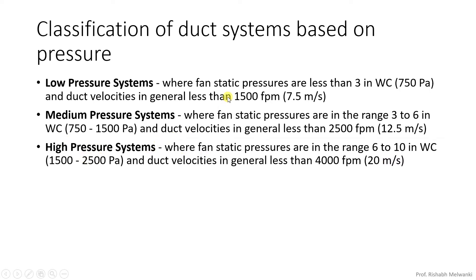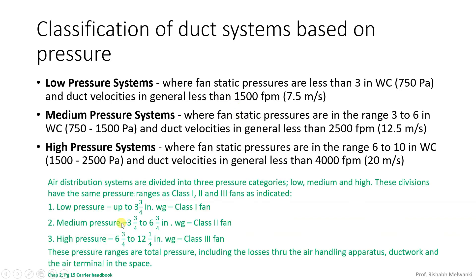Now we have talked about static pressure. What about total pressure? Based on total pressure this classification is found in the carrier handbook chapter 2 page 19. There you will find a low pressure system where total pressure is three quarters of an inch of water column in gauge — this is called a class 1 fan. Then medium pressure: 3 to 3 and three quarters of an inch of water column in gauge — this is called a class 2 fan. When you consider high pressure it is 6 and three quarters to 12 and a quarter inch of water column — that is a class 3 fan.